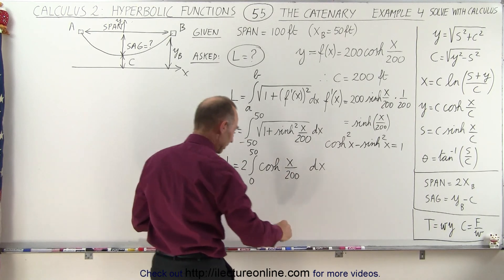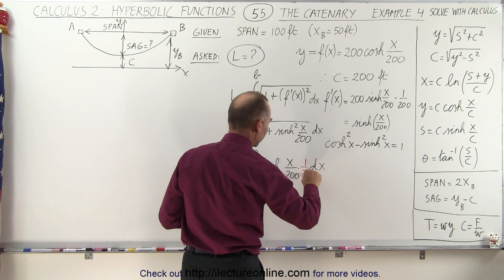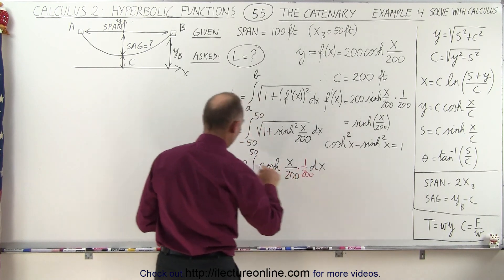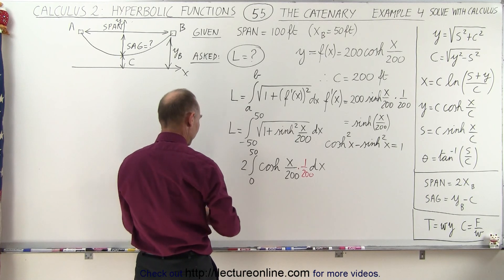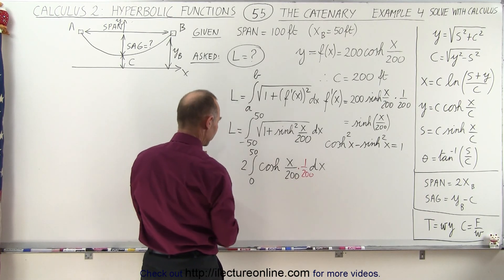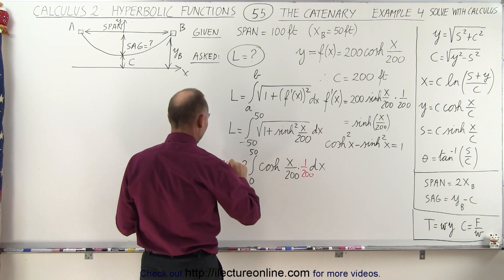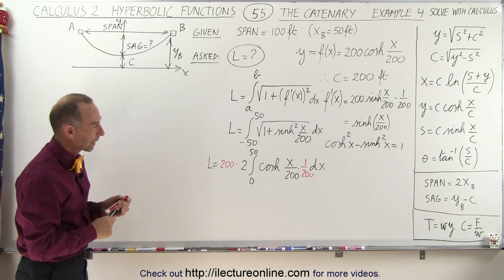So we have to multiply that times 1 over 200. And of course, when we do that, we have to multiply this times 200 to compensate. So I need a little bit more space here. And so we can say L is equal to—divide by 200, and we have to multiply times 200 to compensate for that.